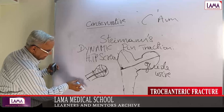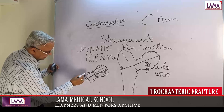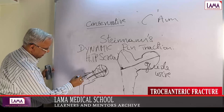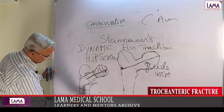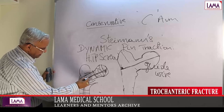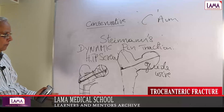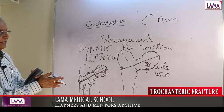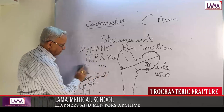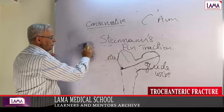Once the guide wire is in correct position, a cannulated screw is passed over it. The screw is placed into a barrel on the plate, which is fixed to the femoral shaft with 3 or 4 cortical screws secured by a locking screw. Once the entire construct is assembled properly, there is compression at the fracture site. Compression at the fracture site causes faster union. However, in osteoporotic bone screws may work out, or if the screw is positioned in the wrong area it may collapse.